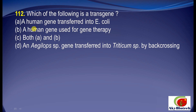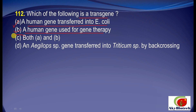Question 12: Which of the following is a transgene? The correct options are: A — a human gene transferred into E. coli, and also a human gene used for gene therapy. So the correct option is both A and B.